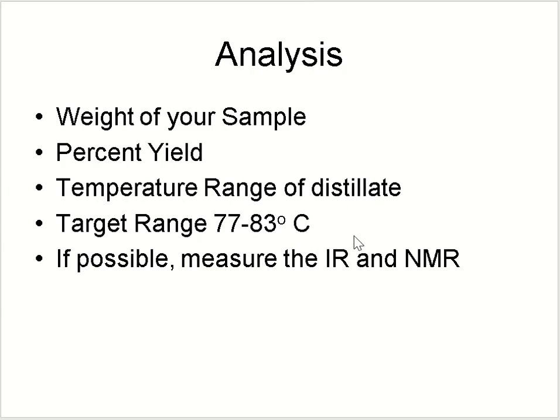After completing the experiment, weigh your sample and calculate the percent yield using the equation, since you are forming cyclohexene from cyclohexanol. You can calculate the percent yield from the molecular weight and moles. The target temperature range for distillation is 77 to 83°C. If possible, you can also measure IR or NMR spectra to confirm that your product is cyclohexene.